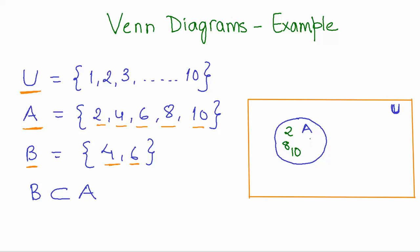Now you can see that we also have set B which has two elements, 4 and 6, and B is contained within A. How would you represent that here? We would circle these two elements, 4 and 6, and label this as B.